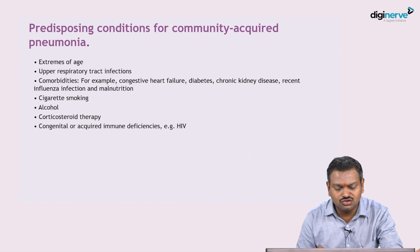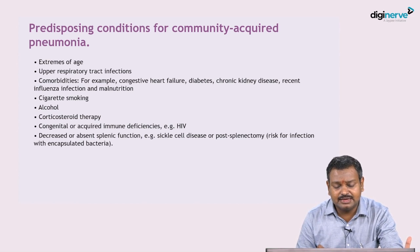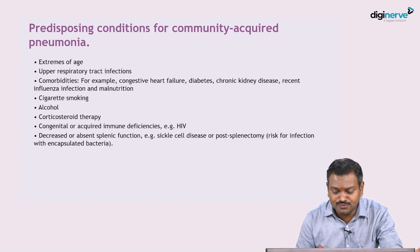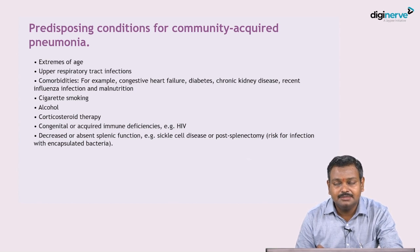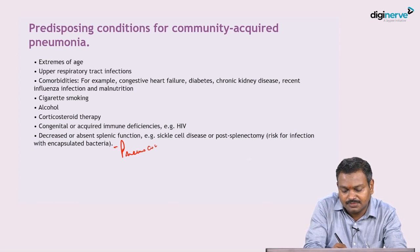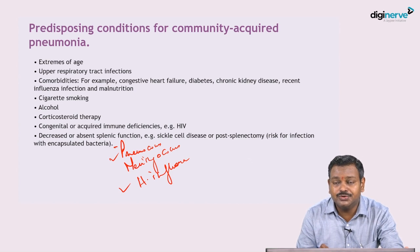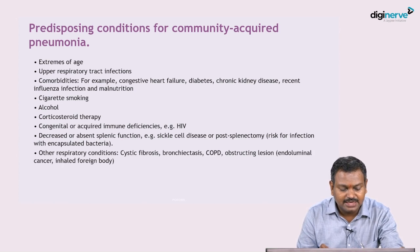Congenital or acquired immunodeficiencies such as HIV/AIDS, immunosuppressive drugs, and decreased or absent splenic function also predispose to pneumonia. The spleen is important for killing encapsulated organisms, so post-splenectomy or autosplenectomy — as in sickle cell disease — increases risk of infection with encapsulated bacteria: pneumococcus, meningococcus, and H. influenzae, of which pneumococcus and H. influenzae both produce pneumonias.